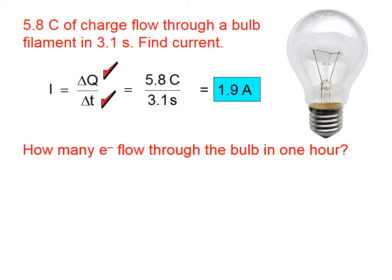How many electrons flow through the bulb in one hour? We know that electric current is essentially the flow of electrons. Would we be able to figure out how many electrons flow through the bulb in one hour? We don't know the amount of charge that flows through the bulb in one hour, but we can find it, because we know that 5.8 coulombs of charge flow every 3.1 seconds.